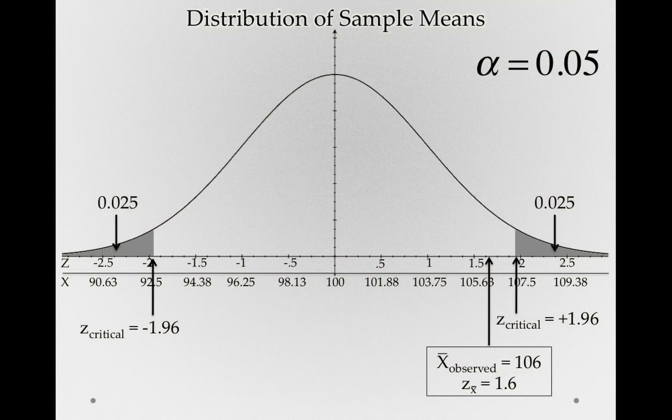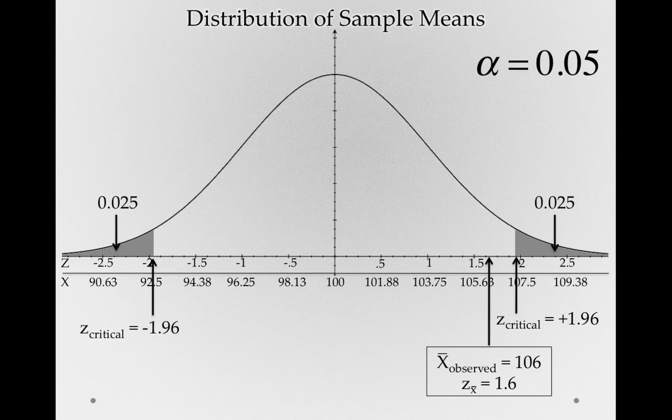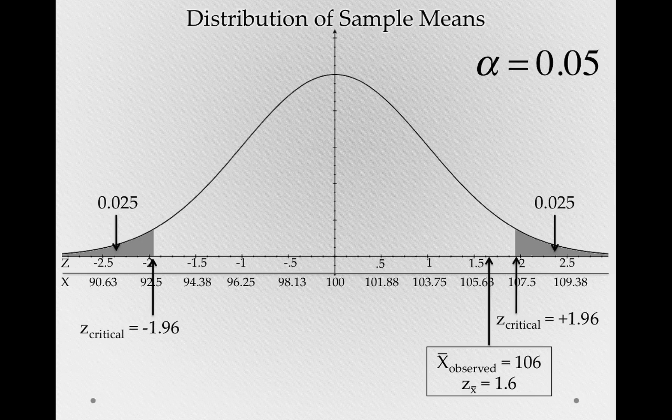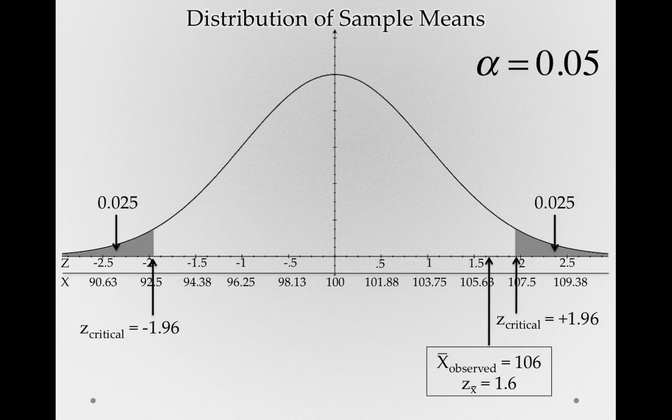Remember, p-values that are smaller mean a sample that's more extreme. A p-value of 0.00001 would mean a sample that only had a tiny proportion of the distribution more extreme than it. A two-tailed p-value of 0.7 would mean that 70% of the distribution was more extreme than it. So p-values that are smaller means more extreme samples.